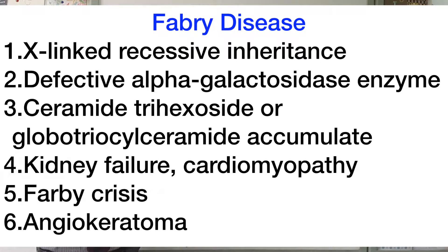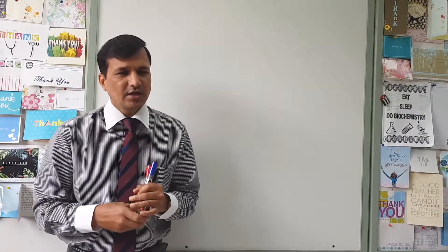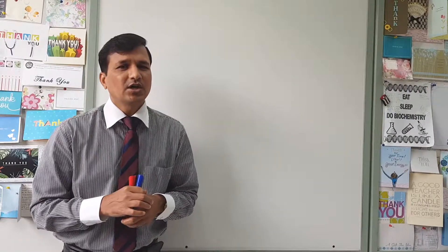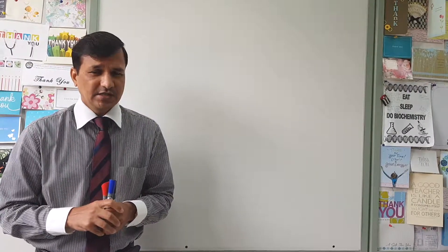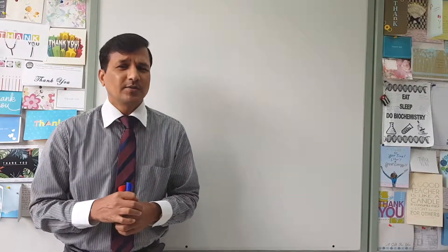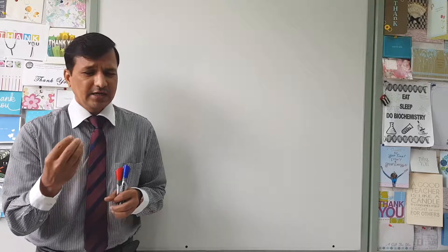If you take a biopsy of the angiokeratoma and examine it under the microscope, it contains ceramide trihexoside. Now, coming to Gaucher's disease: Gaucher's disease is because of beta-glucosidase enzyme deficiency, also called glucocerebrosidase. This leads to accumulation of glucocerebroside in the tissues.